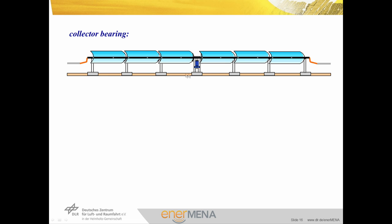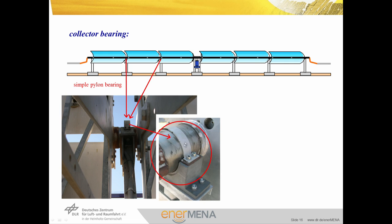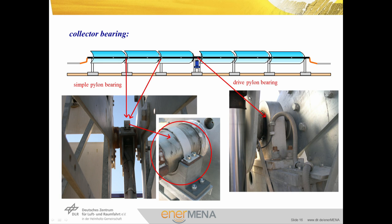We have two different types of pylons, each with a special bearing system. For simple pylons, friction bearings are used — with an anti-friction layer under the shaft and a clamp so the shaft cannot jump out of the bearing. The drive pylon, where all axial and radial forces come together, requires a very strong and robust bearing — normally ball bearings are used.